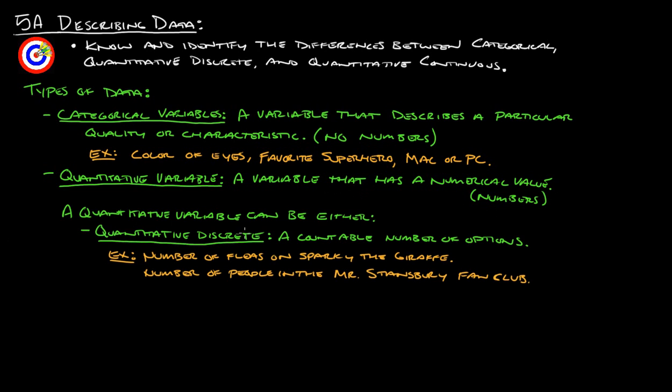One is quantitative discrete, which is a countable number of options. For example, the number of fleas on Sparky the Giraffe, though that would be hard to count, you could actually count it. Also, the number of people in the Mr. Stansberry Fan Club. It's a number that you could actually put a finger on and say that's an exact number.